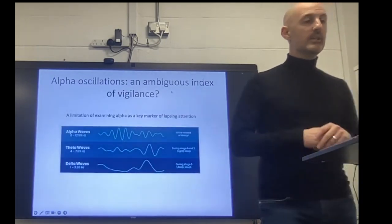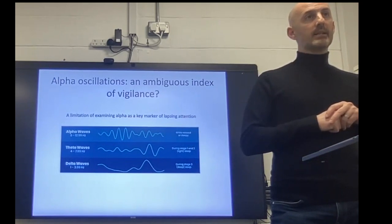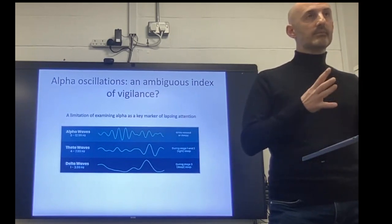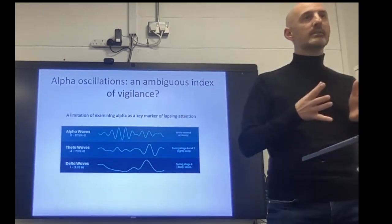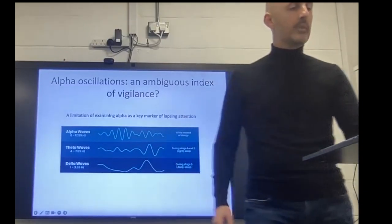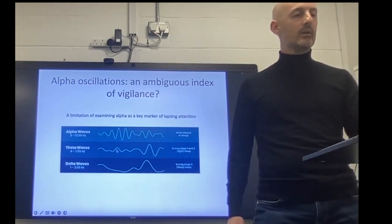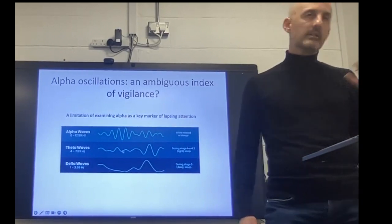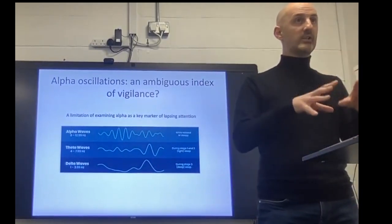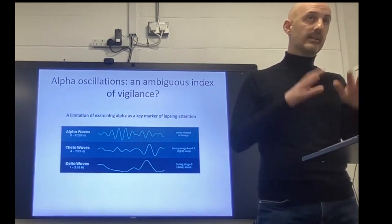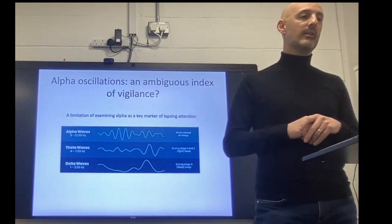One limitation with respect to alpha as a marker for lapsing attention is that we see desynchronization of alpha when engaged, but also in a different context — as we approach sleep when we get very drowsy, alpha also reduces. So we see synchronization of alpha when we're tired or mentally relaxed, but alpha gives way to theta during stage one at the onset of sleep. This creates a somewhat ambiguous index of vigilance — alpha is suppressed both when we're engaged visually and when we're getting very drowsy.